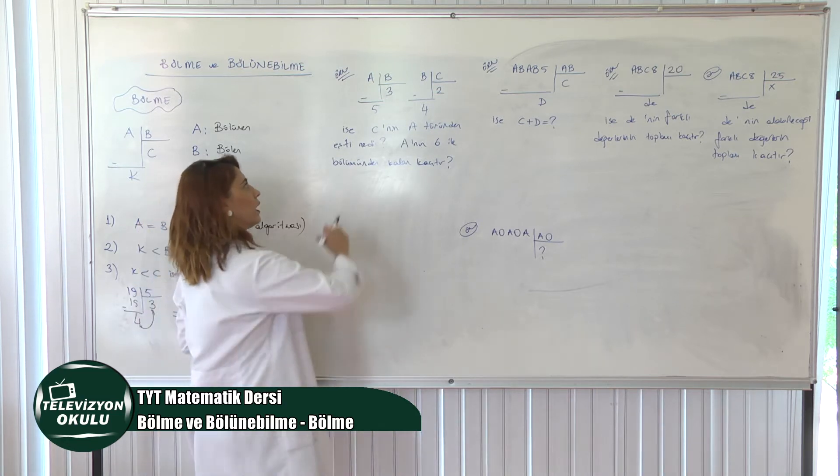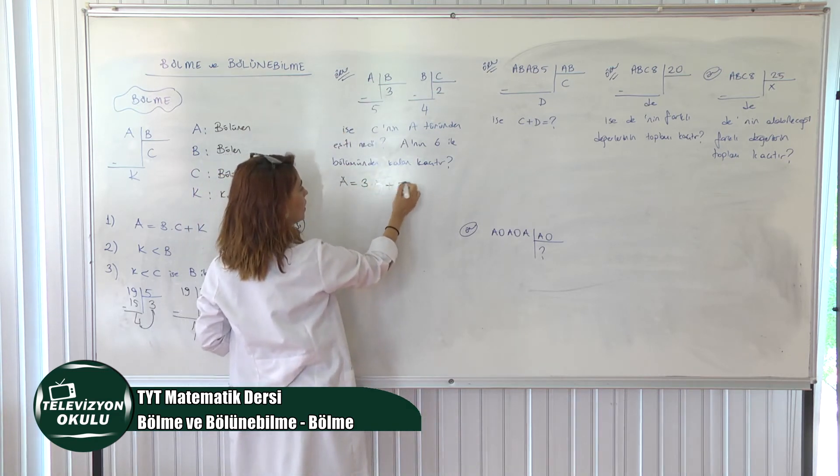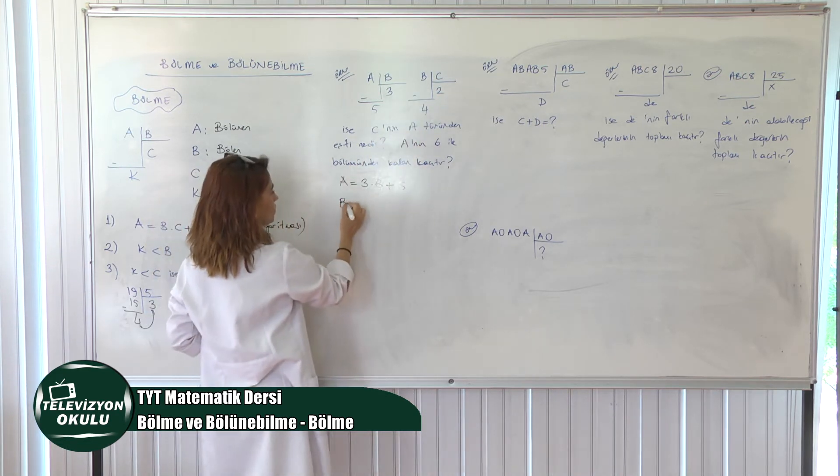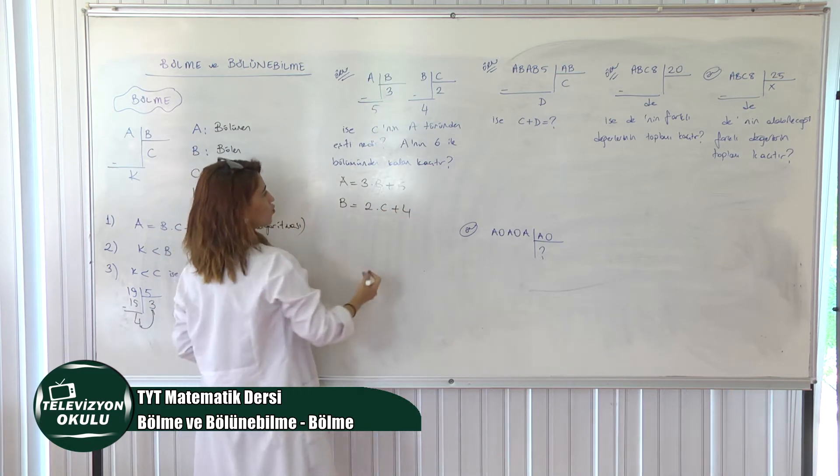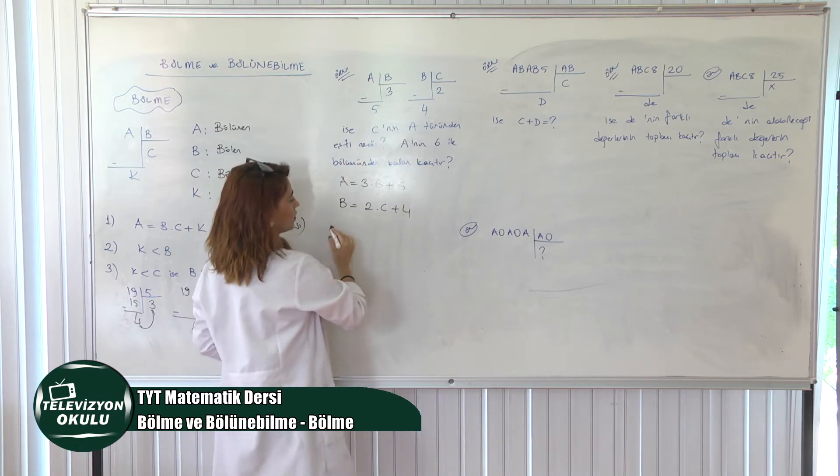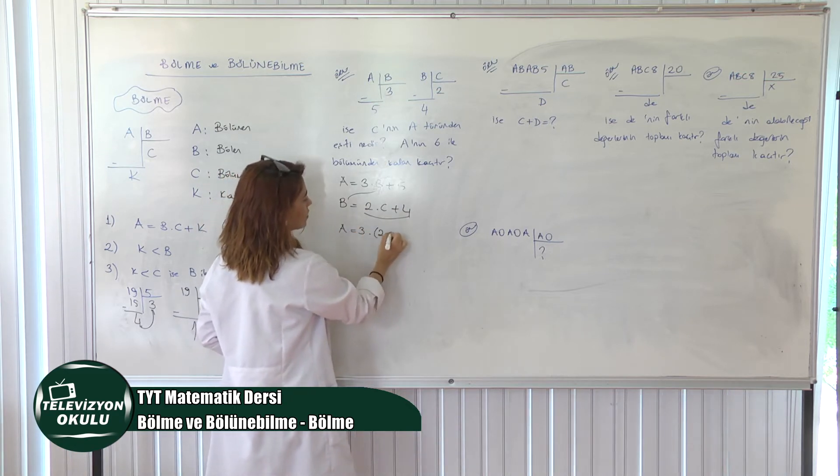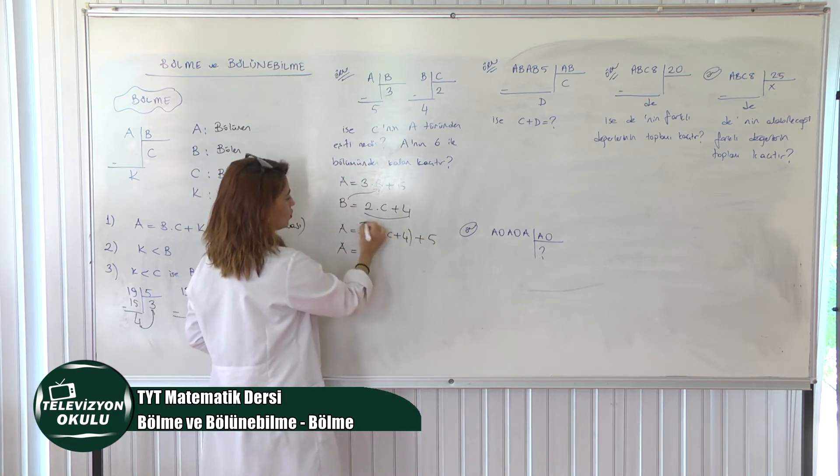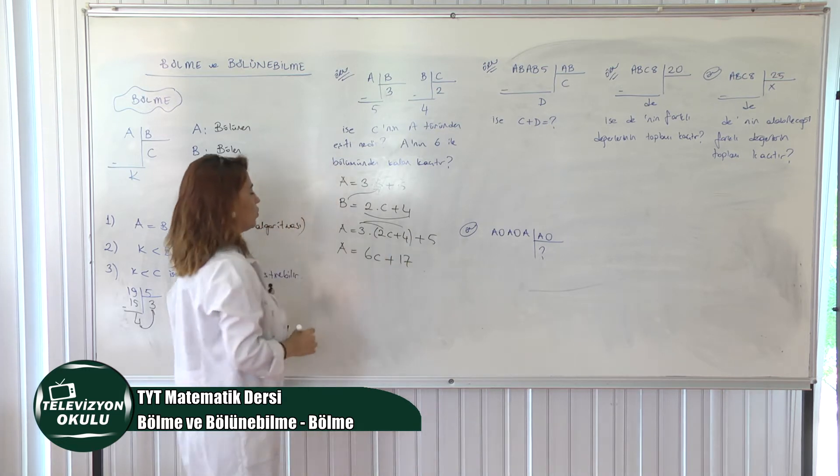Öncelikle bölme özdeşliğimize göre A sayısını şu şekilde yazsak. A eşittir 3 tane B artı 5'tir diyoruz. Aynı şekilde B sayısı eşittir 2 tane C artı 4'e. O halde C'nin A türünden eşit dendiği için B'nin olmaması gerekiyor elimde. O zaman B'yi alalım. Yukarıdaki B'nin yerine 2C artı 4 yazalım. A eşittir 3 tane 2C artı 4 artı 5 diyoruz. Dağıtırsak 3'ü ne olur? 6C artı 12 buradan 5 buradan 17 olur dedik.